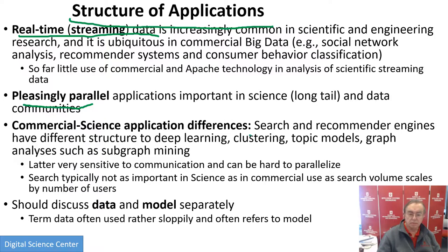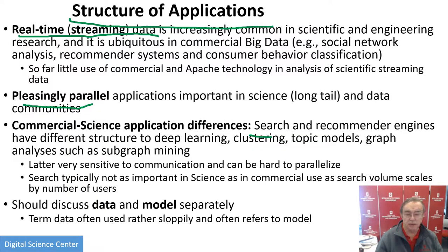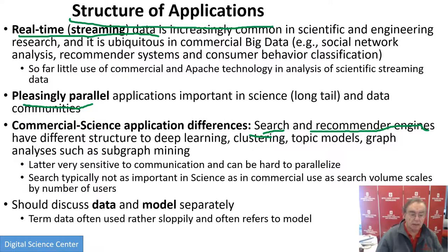Some of the problems, like recommender engines, don't really exist in science or in simulations. Search is again a dominant big data problem which you don't really see in science — there's a little bit of search in science, but it's not a dominant thing. And those are different yet to some of the machine learning, which are of growing importance in big data.